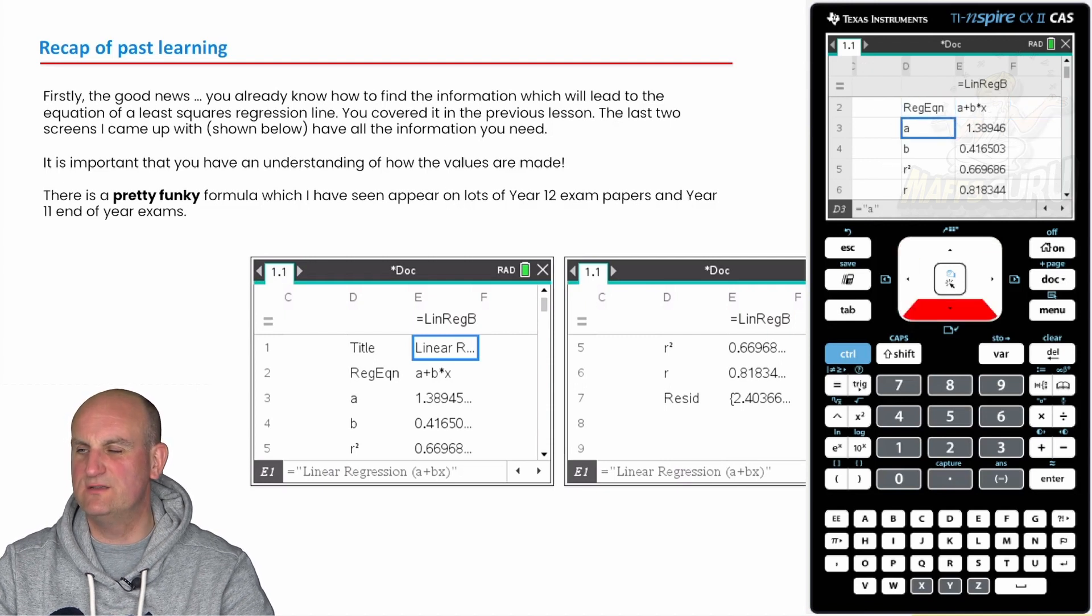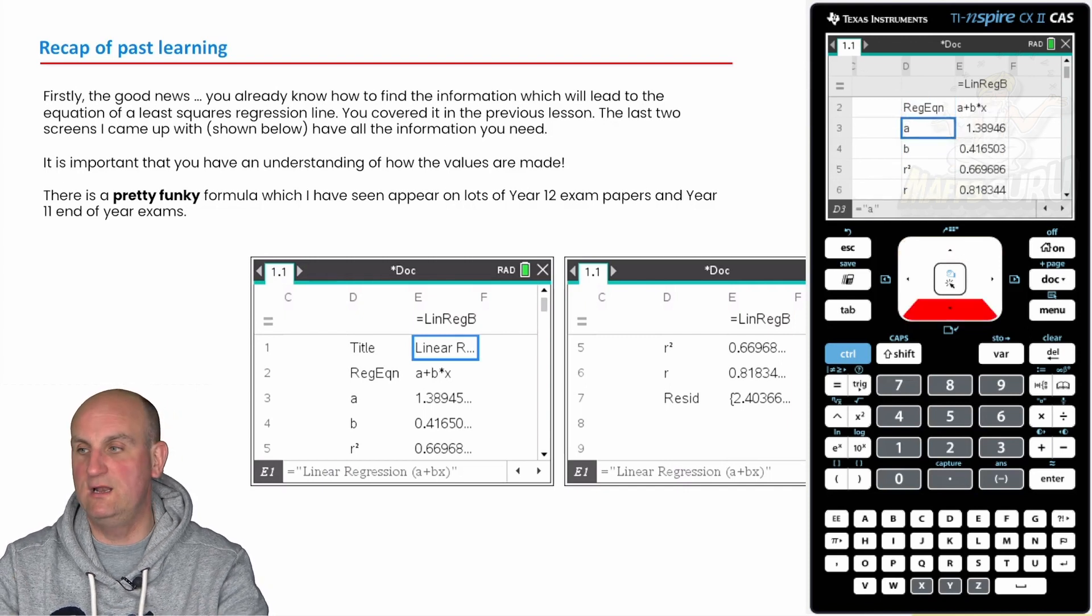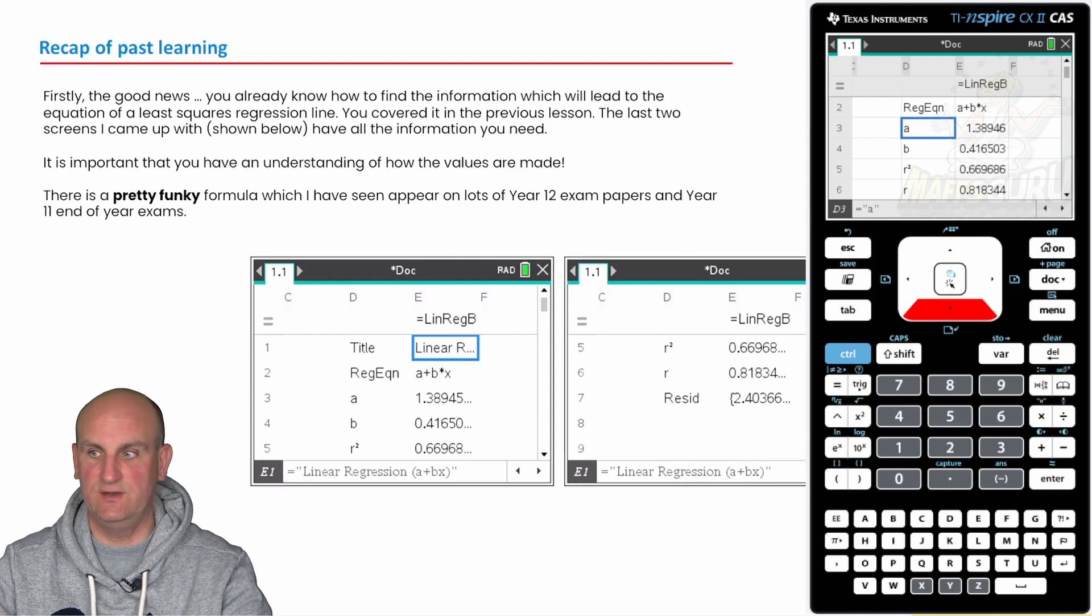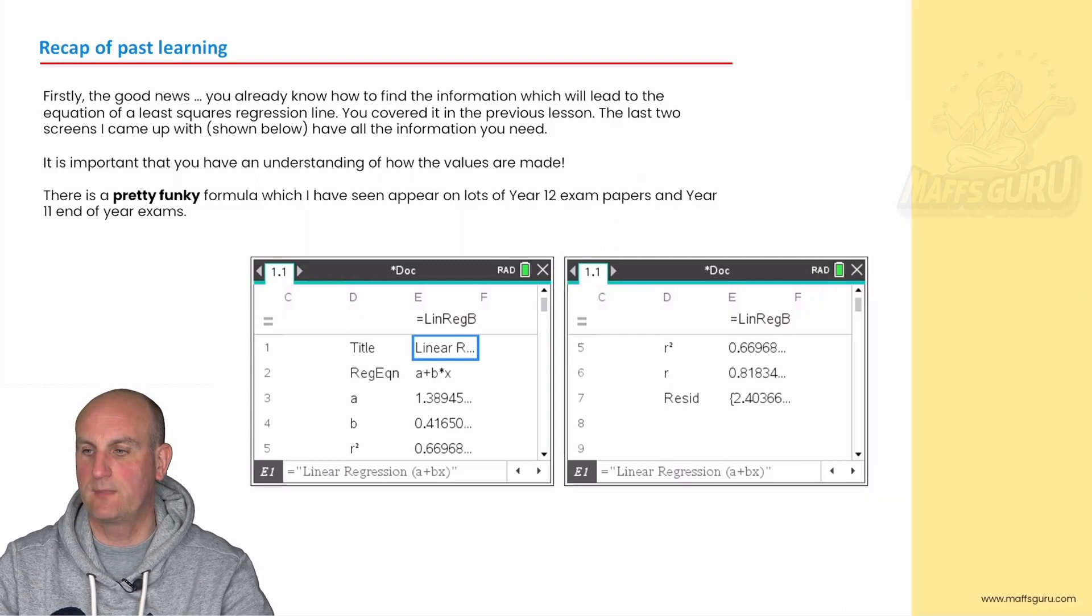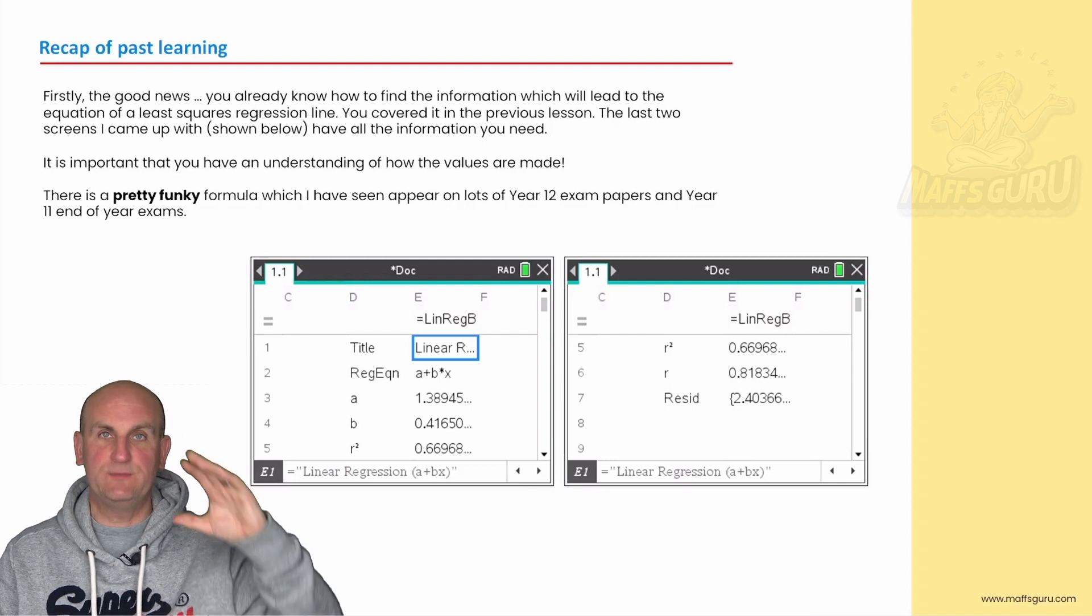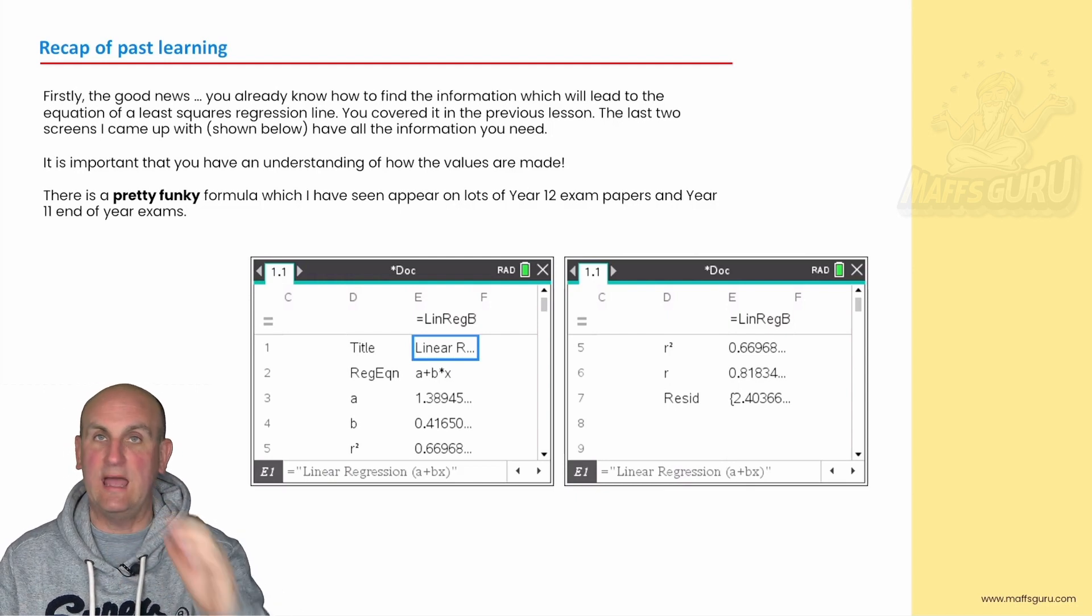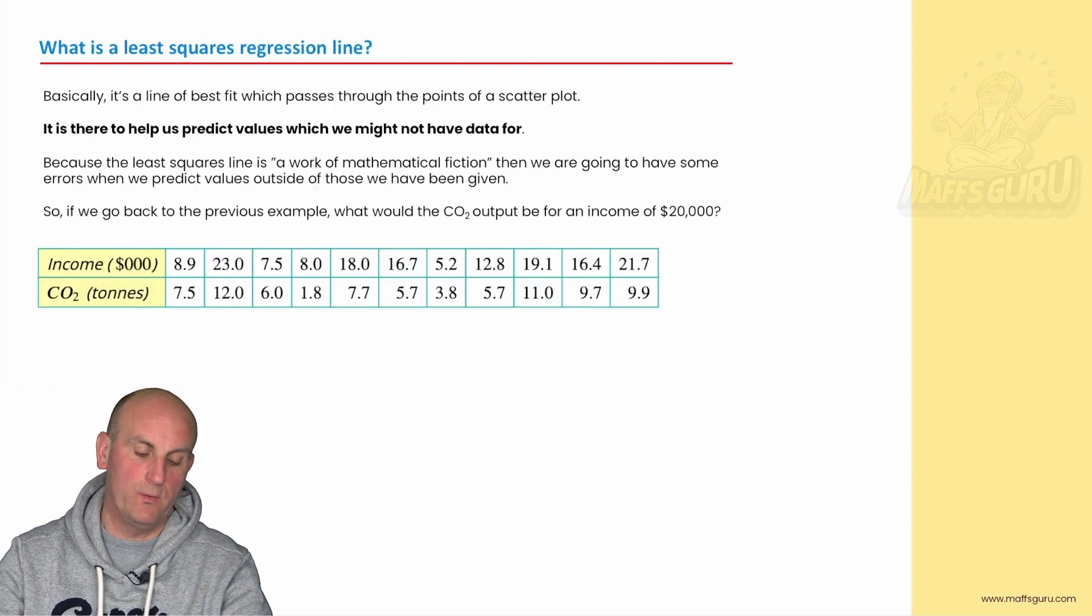Now what did I then do? I wanted to bring up my statistical information. So I could go menu, statistics, stat calculations, and there were two ways of doing it. You can either use two variable statistics or we're going to use for this the linear regression. My X list basically says what was your EV? Well my income was my EV and my Y list was my RV which was CO2. I hit enter and out came all of this information. You've got values of A, B, R squared, R, Resid. Now those values in themselves are really important and that's what this video is going to be all about. Being able to put that information into your CAS and bringing up your values of R squared, R, A, and B. So important. But why?